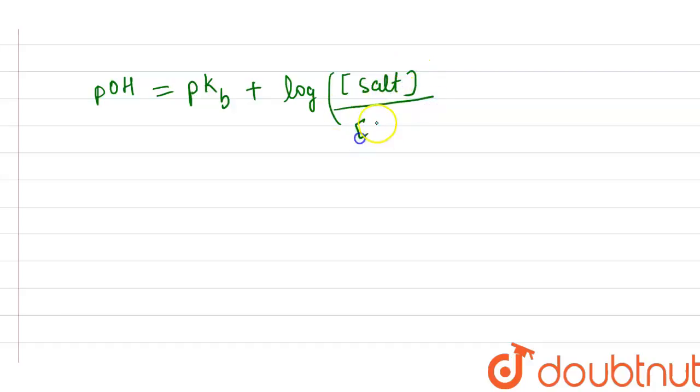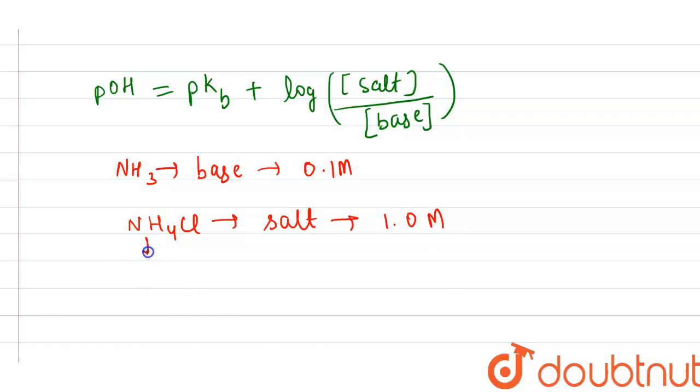In the question, we have given ammonia, and we know that ammonia is a base, and its value is 0.1 molar. Second, we have given ammonium chloride.